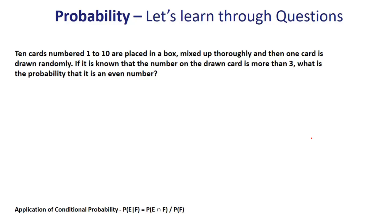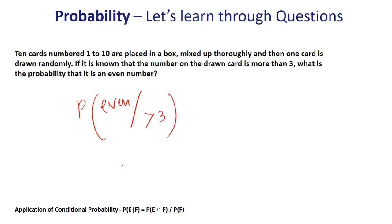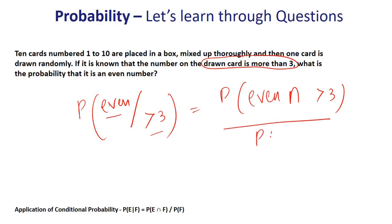My request is to solve a few questions to get these concepts clarified. Ten cards numbered 1 to 10 are placed in a box, mixed up thoroughly, and one card is drawn randomly. If it is known that the number on the card is more than 3, what is the probability that it's an even number? The question is: probability of getting an even number given that the number is greater than 3. So P(even | >3) = P(even ∩ >3) / P(>3).